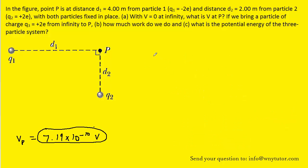For part B, we are asked how much work do we do if we bring a particle of charge positive 2E from infinity to point P. Now the potential at infinity is assumed to be 0. That was actually stated in the question. We know that the work done in moving a charged particle is equal to its charge times the change in the electric potential.